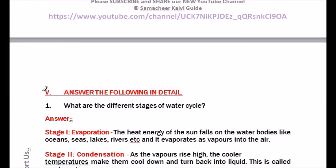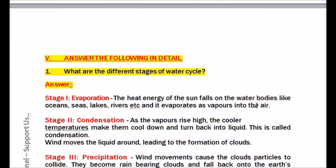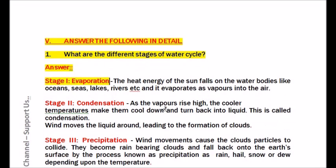Roman numeral V: Answer the following in detail. Question number one: What are the different stages of the water cycle? Stage one — Evaporation: The heat energy of the sun falls on water bodies like oceans, seas, lakes, rivers, etc., and water evaporates as vapor into the air. Stage two — Condensation: As vapors rise high, the cooler temperatures make them cool down and turn back into liquid. This is called condensation, and the wind moves the liquid around leading to the formation of clouds.